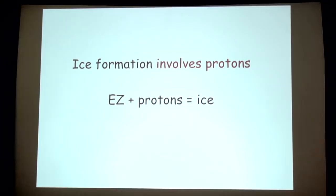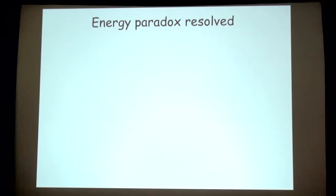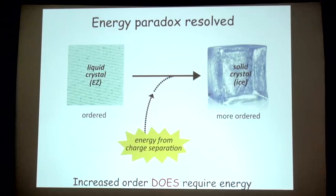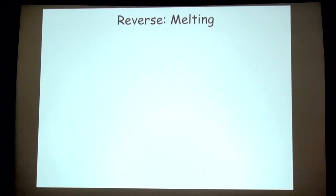The energy paradox is resolved when you consider this process. You're starting with an EZ, which is a liquid crystal — moderately ordered — and ice is more ordered. The additional energy comes from charge separation, which is potential energy. So there's no violation of any thermodynamic principle; increased order does require energy. In the reverse case, if you melt ice you should get EZ water. We tested that and found exactly that — the melting water showed a peak at 270 nanometers, the signature of EZ water, which ordinary water doesn't have.